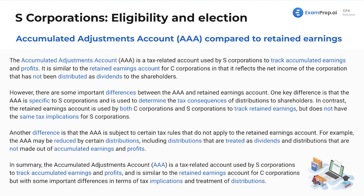Comparing this to retained earnings — let's really compare it because that's a great way to remember the differences. The AAA account is a tax-related account used by S corporations to track accumulated earnings and profits. It is similar to the retained earnings account for C corporations in that it reflects the net income of the corporation that has not been distributed as dividends to shareholders. Generally, what increases retained earnings is net income and what decreases it is dividends — that's financial accounting 101. However, there are some important differences between the AAA and the retained earnings account.